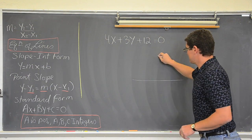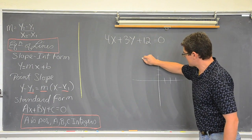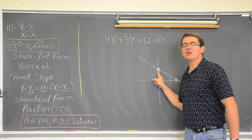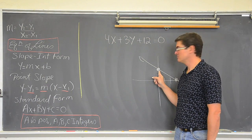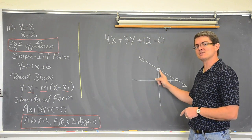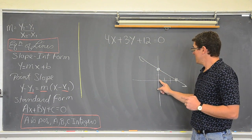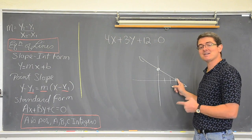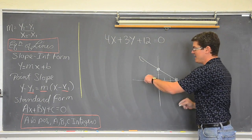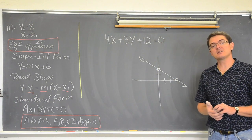Let's talk about that. Here is an equation: 4x plus 3y plus 12 equals zero. I want to graph this using x and y intercepts. What is happening when the line crosses the x and y axis? If you are on the y-axis, isn't the x equal to zero? So when you have a y-intercept, the x is zero. And if I am on the x-axis, my y value is zero.